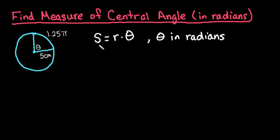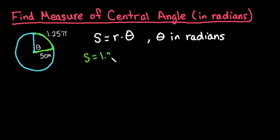We are going to use the formula S equals R times theta, where S represents the arc length, R is our radius, and theta is our central angle measure. So in this case we know S is 1.25 pi.